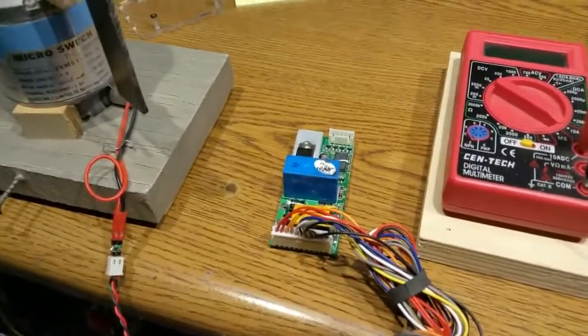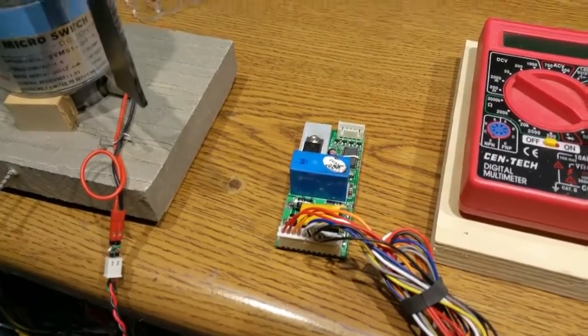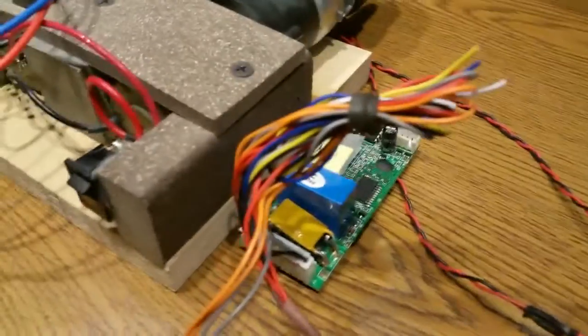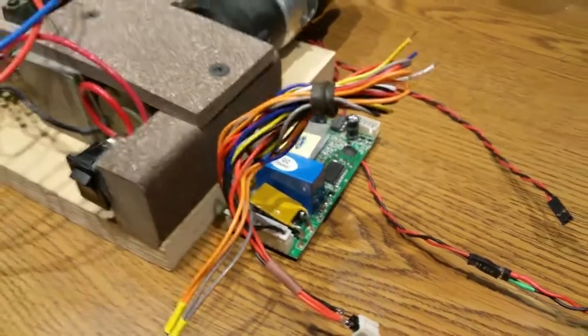In addition, there are two DCC decoders, an 8 amp one here from a G scale locomotive and another 8 amp one right over here again from a G scale.